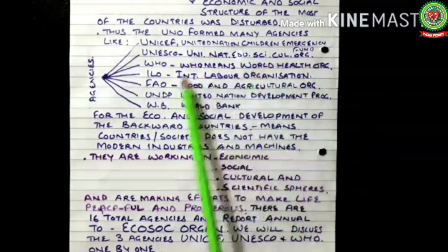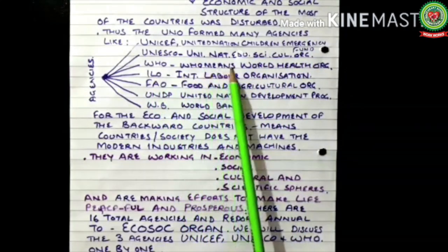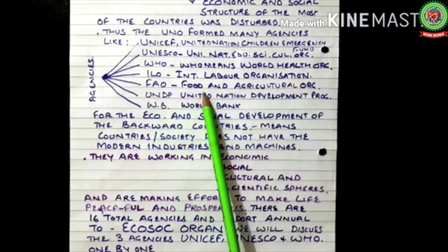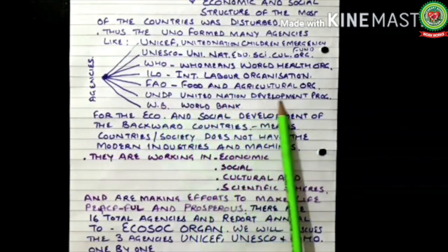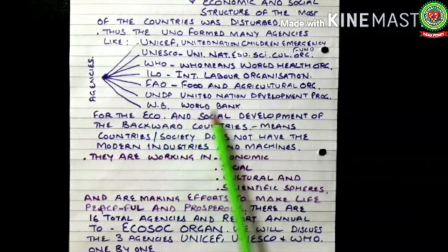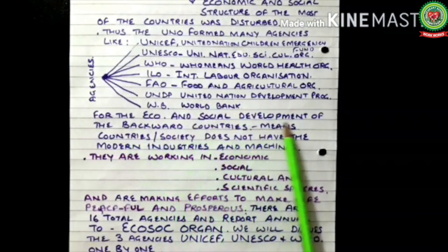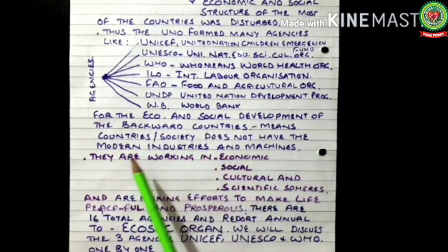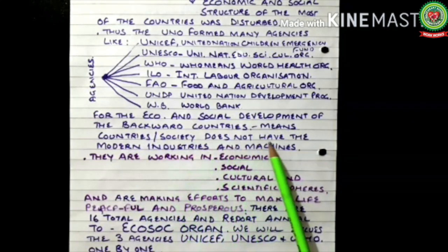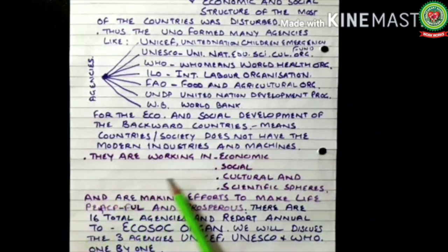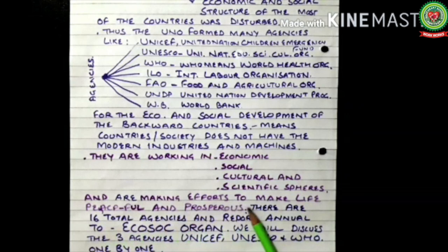The UNO formed many agencies: UNICEF (United Nations International Children's Emergency Fund), UNESCO (United Nations Educational Scientific Cultural Organization), WHO (World Health Organization), ILO (International Labour Organization), FAO (Food and Agriculture Organization), UNDP (United Nations Development Programme), and WB (World Bank) for economic and social development of backward countries — countries whose societies do not have modern industries and machines. They are working in economic, social, cultural and scientific spheres, making efforts to make life peaceful and prosperous.